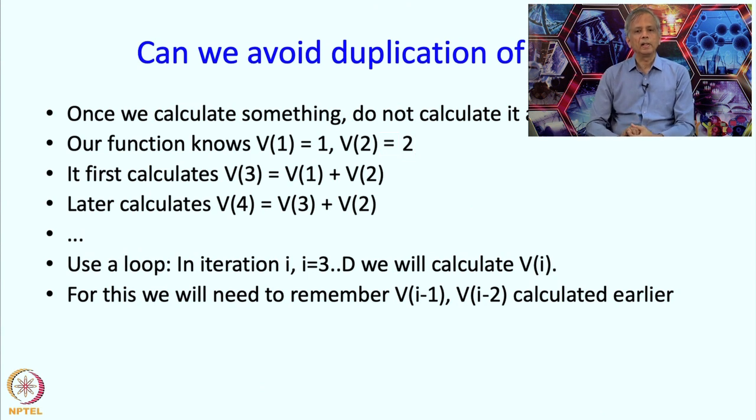And how do we calculate Vi? Well, Vi requires us to take Vi-1 which we must have calculated in the previous iteration and Vi-2 which we must have calculated in the iteration previous to that, and add these two values.